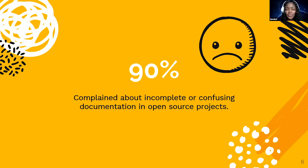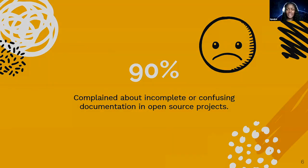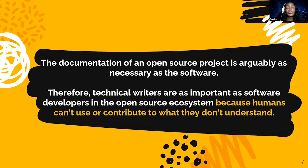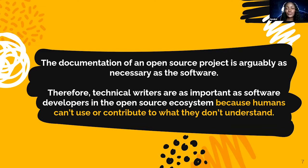Everybody's complaining about finding confusing documentation or not seeing any existing documentation at all. The documentation of an open source project is arguably as necessary as the software itself. Therefore, technical writers are as important as software engineers, because nobody will use what they don't understand. If you put an interesting project on GitHub without any documentation, someone who finds it won't know what to do, and everything you've worked on goes to waste.